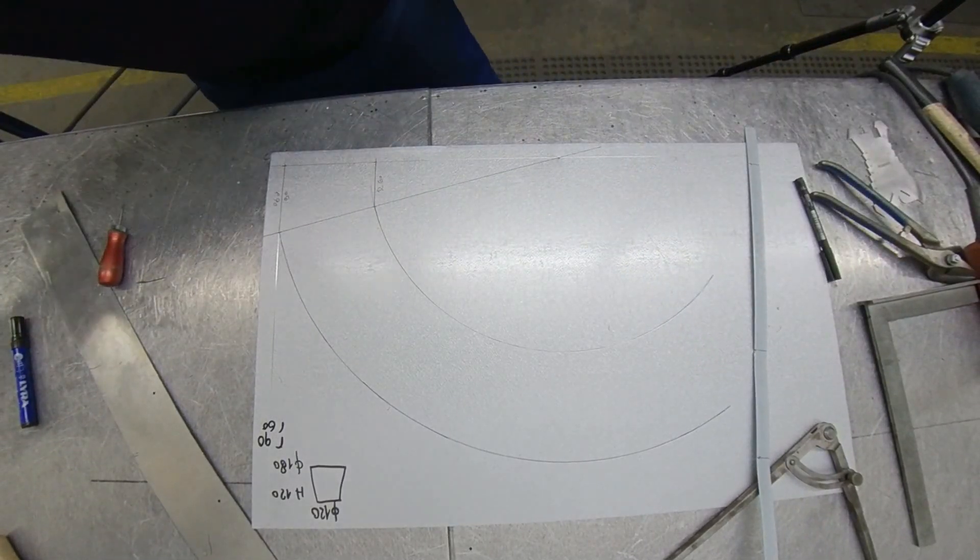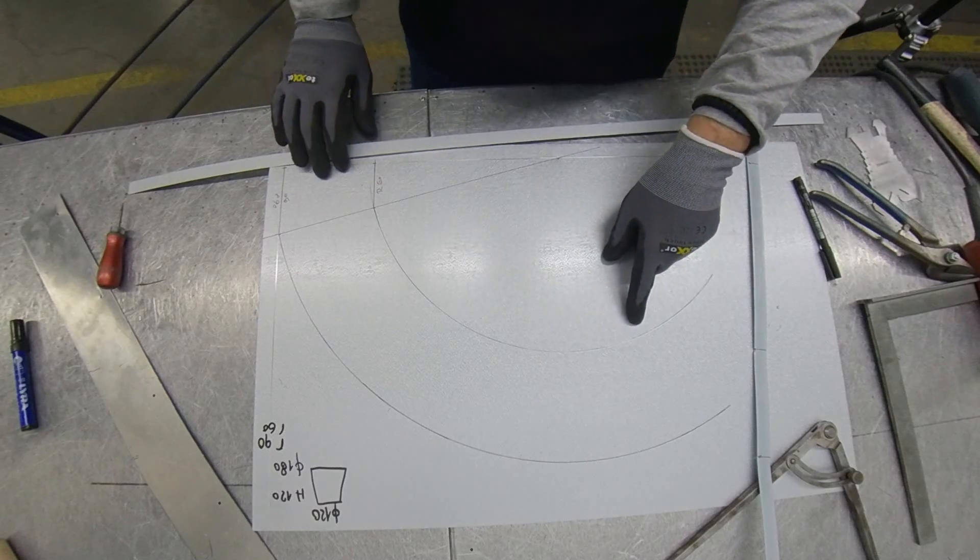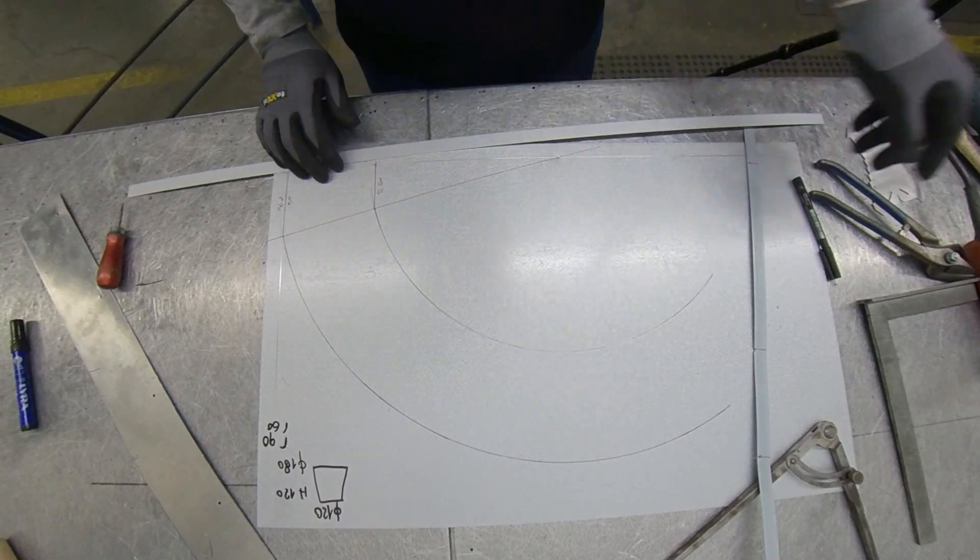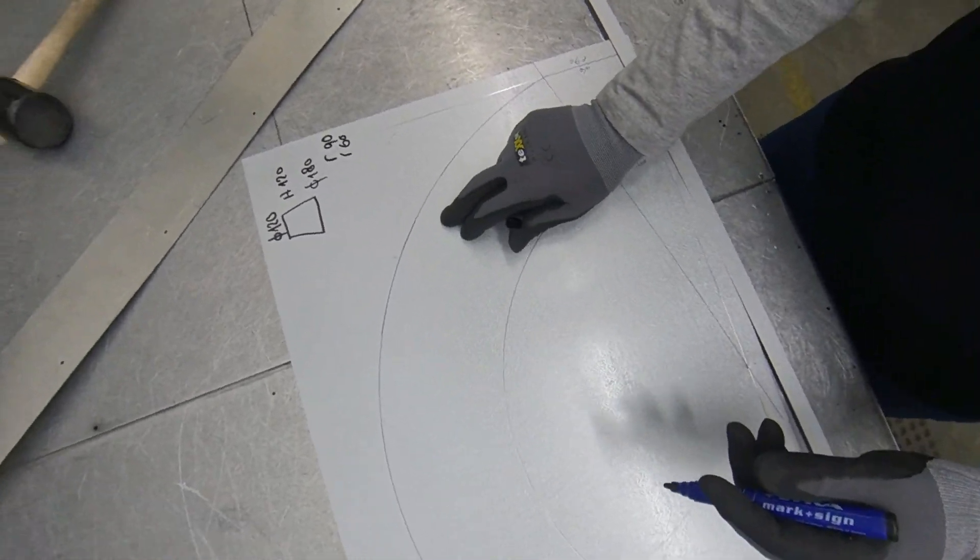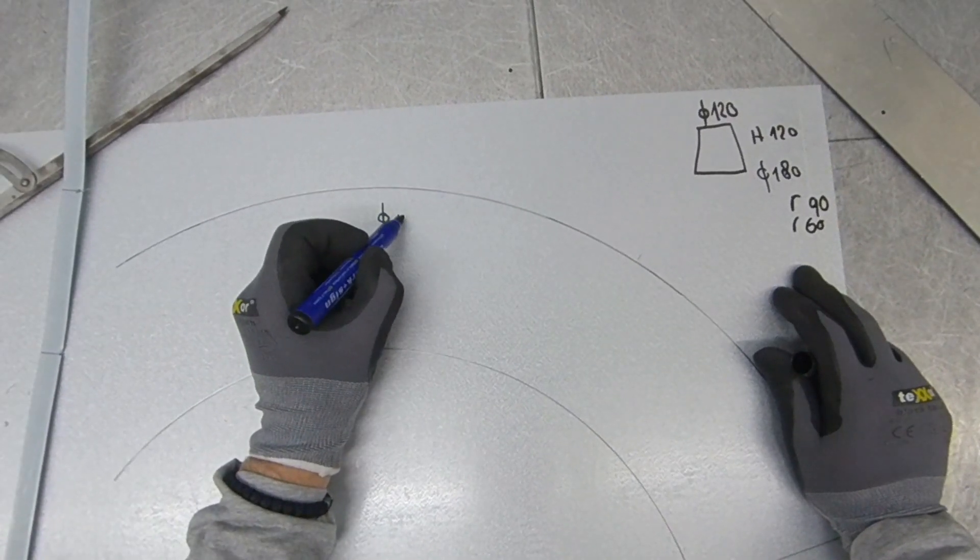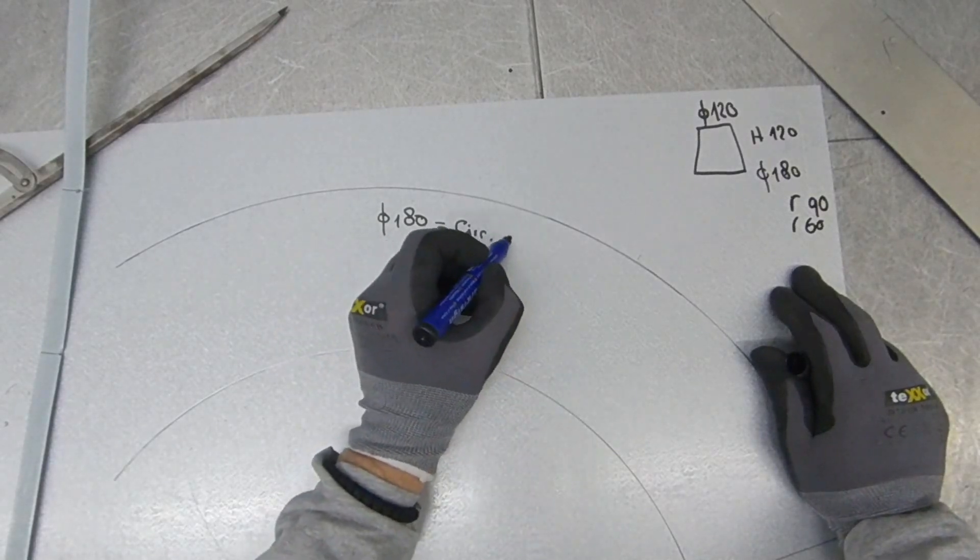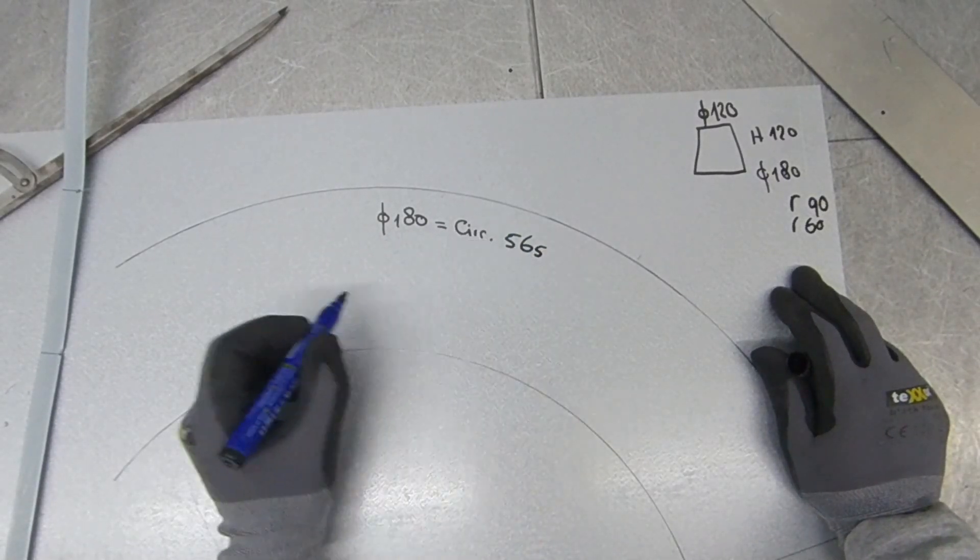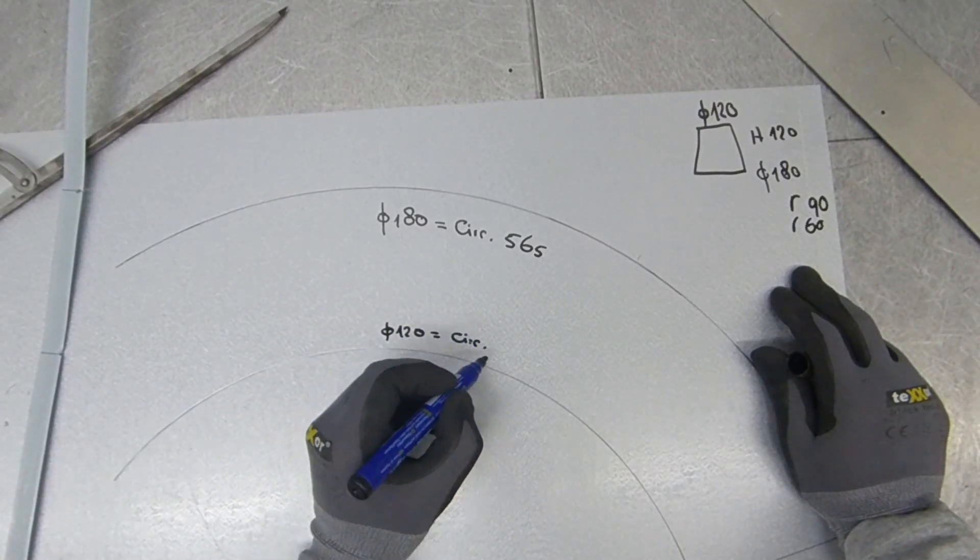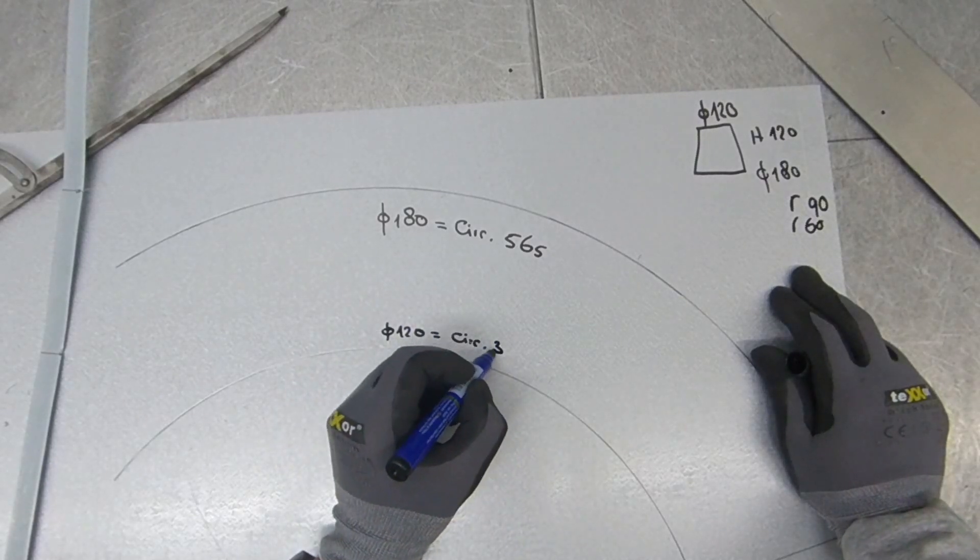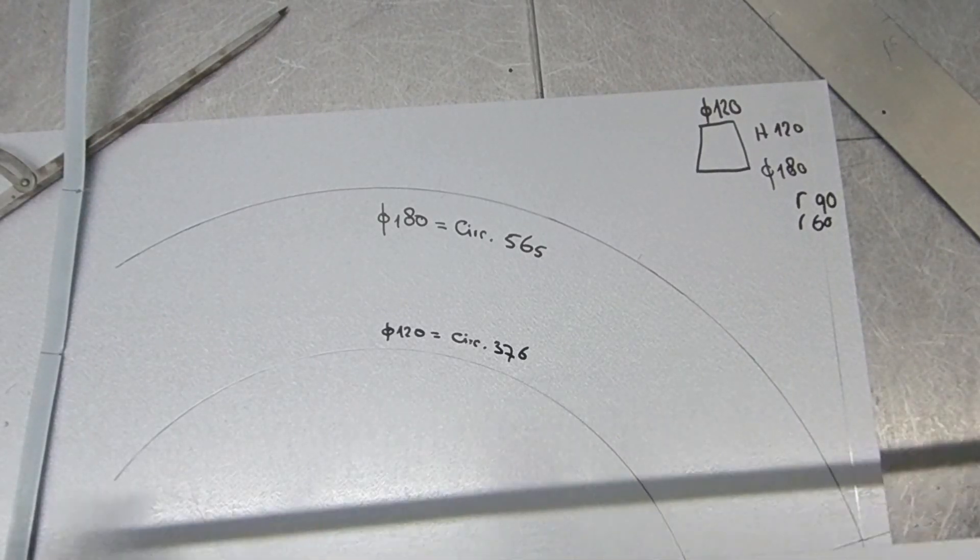Next step is I need the circumference of the inside diameter and the outside diameter - big with a small diameter. So the circumference of the big one, diameter 180, has a circumference of 565, and the small diameter 120 has a circumference of 376.